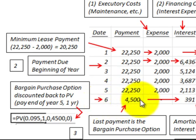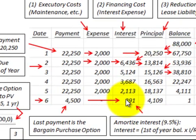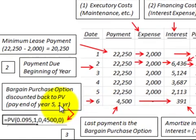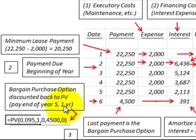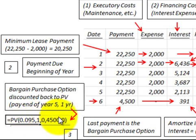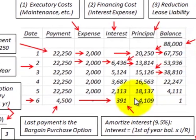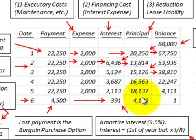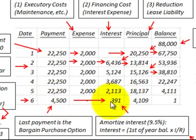The bargain purchase option also has an interest component and a principal amount. At the end of the fifth year, we discount it back to the beginning of the fifth year using the present value function in Excel at 9.5% for one year. Its present value is $4,109, so subtracting that from the payment amount of $4,500 gives us an interest expense of $391.